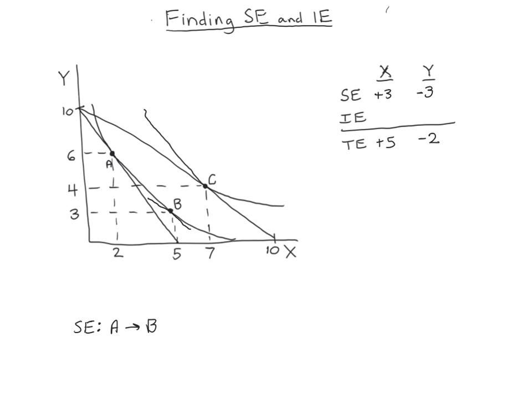So then if our total effect is just sum of substitution and income effect, we really don't need to look at the graph to figure out our income effects. We can calculate that for x, if the sum of SE and IE is going to be five, then the IE must be plus two. But just to be sure, let's look at the graph and verify that that's right. So our income effect is basically the change we get from having more utility, from moving from b to c. And we can see that for x, that's moving from five to seven. So that is indeed plus two.